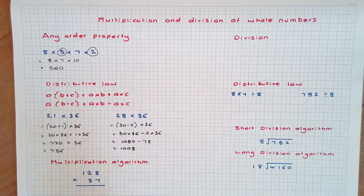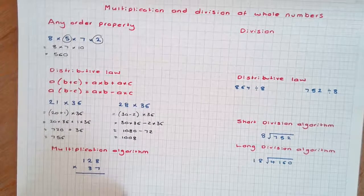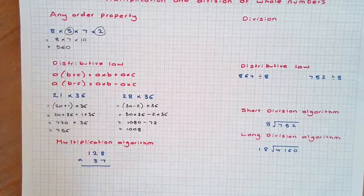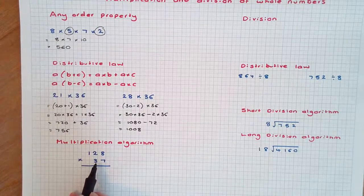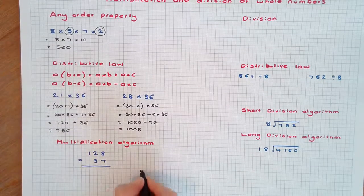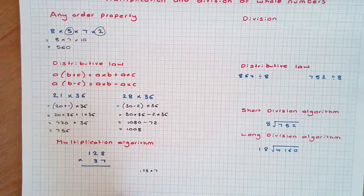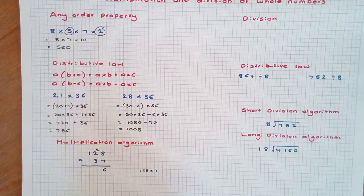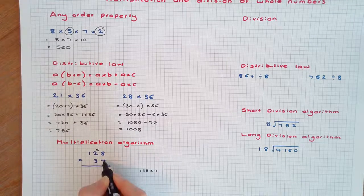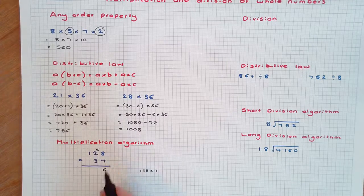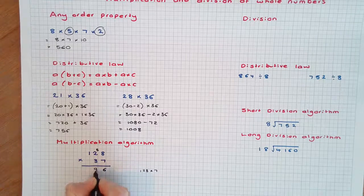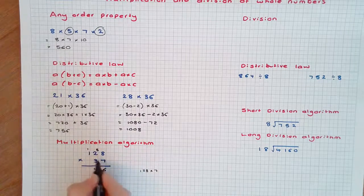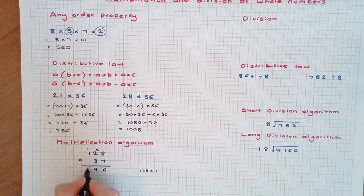Larger numbers are best multiplied using the multiplication algorithm. 128 × 36. The first line of working will be 128 × 7. 7 × 8 is 56, carry the 5 into the tens place value. 2 × 7 is 14 plus the 5, which is 19, carrying the 1. 1 × 7 is 7 plus 1 is 8.